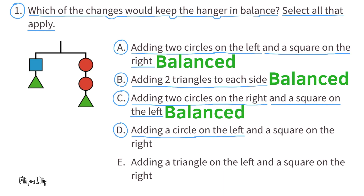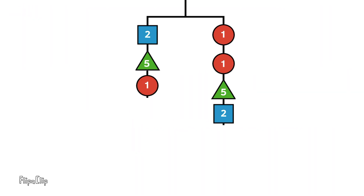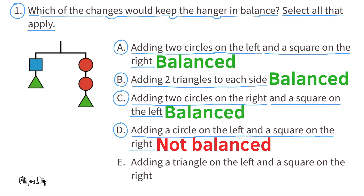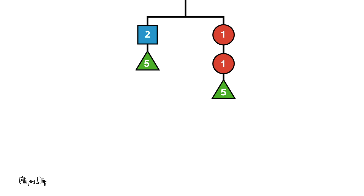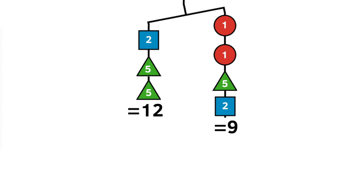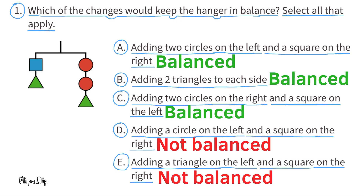D: Adding a circle on the left and a square on the right. Adding a circle on the left is like adding 1, and adding a square on the right is like adding 2, so the total would be 8 on the left and 9 on the right — 9 is greater than 8, so this hanger is not balanced. E: Adding a triangle on the left and a square on the right. Adding a triangle adds 5, and adding a square adds 2, giving 12 on the left and 9 on the right. Since 12 is greater than 9, this hanger is not balanced.